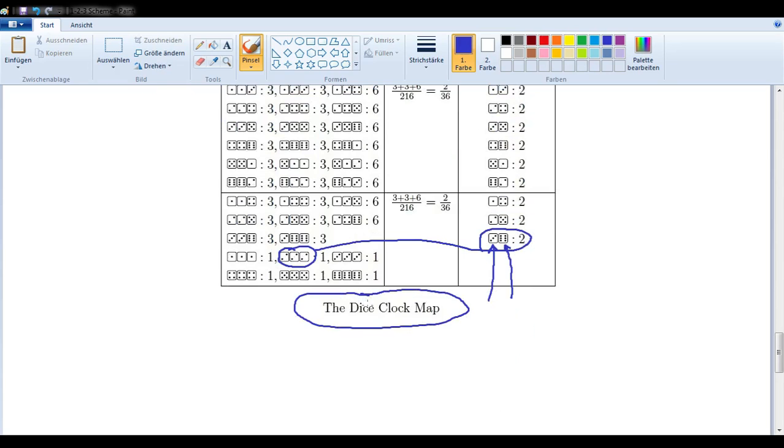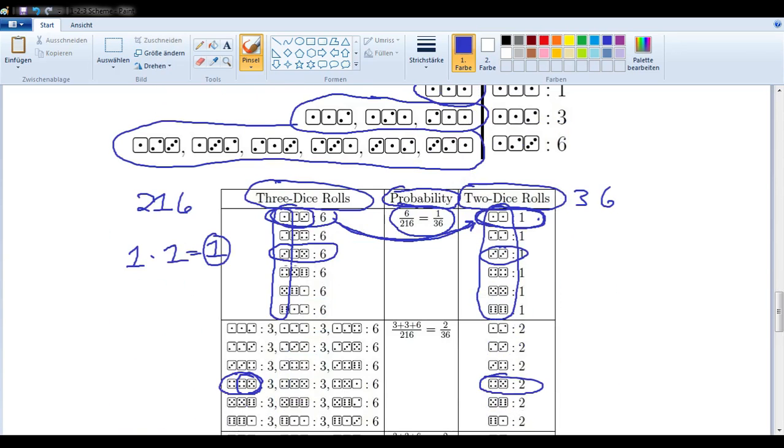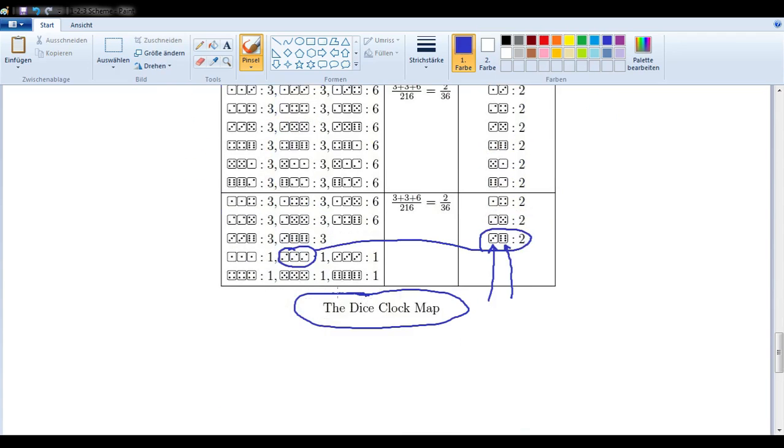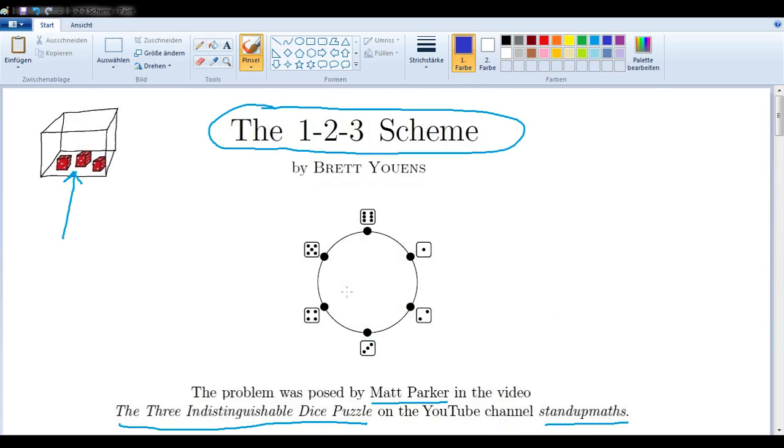The reason I call it the dice clock map is because of what we talked about before. We're wanting to see, for example, these straights as being related even if they go across the 6,1 border, so the fact that we're using this clock to measure distances means that we can preserve a lot of symmetries, hence the name, the dice clock map. So, that is the 1-2-3 scheme for solving the three indistinguishable dice puzzle.